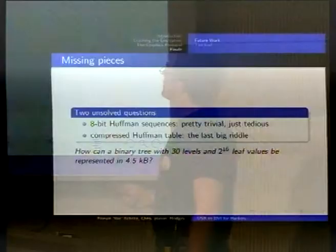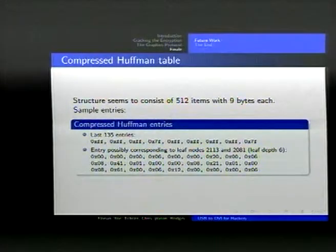And this entire tree is obviously somehow represented in the 4.5 kilobyte table, which is sent to the device. And this, so the tree doesn't seem to have any obvious structure, but somehow it's still represented in there. So, yeah, here we have some sample entries. The structure seems to look like we have 512 records, each of which has 9 bytes. And this is particularly evident in the last, maybe 135 or so entries, which look like they are empty, and they all have this structure.